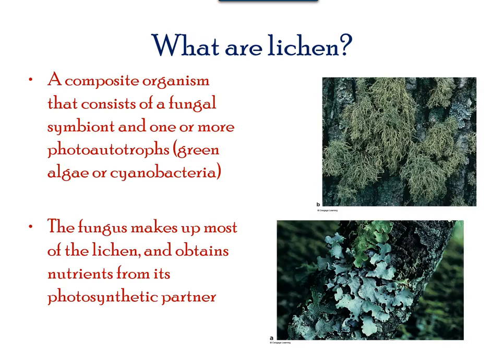Lichens are a partnership between fungi and algae, usually found on rock surfaces. They are able to leach nutrients from the rock and break them down. Lichens are not a single organism; rather, a fungus living in close contact with the photosynthetic organism of algae.